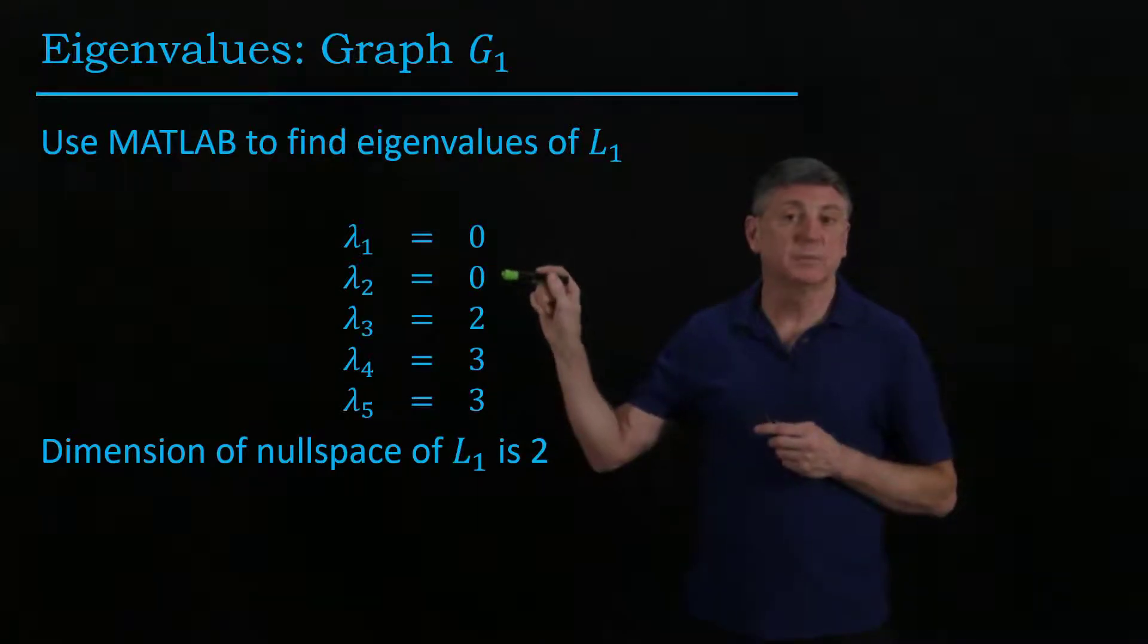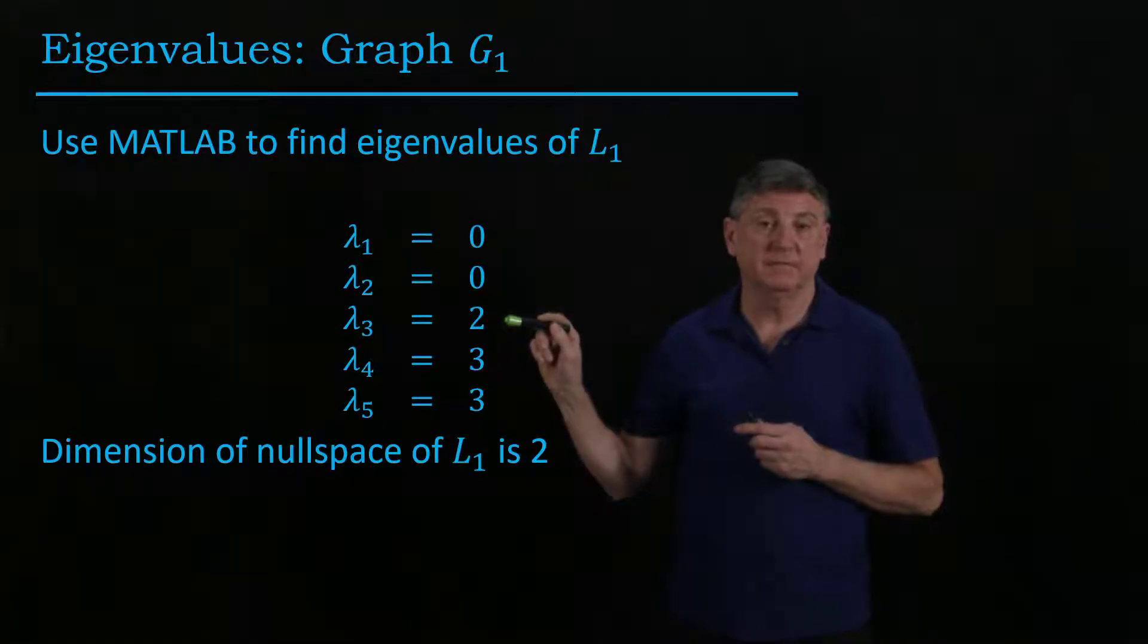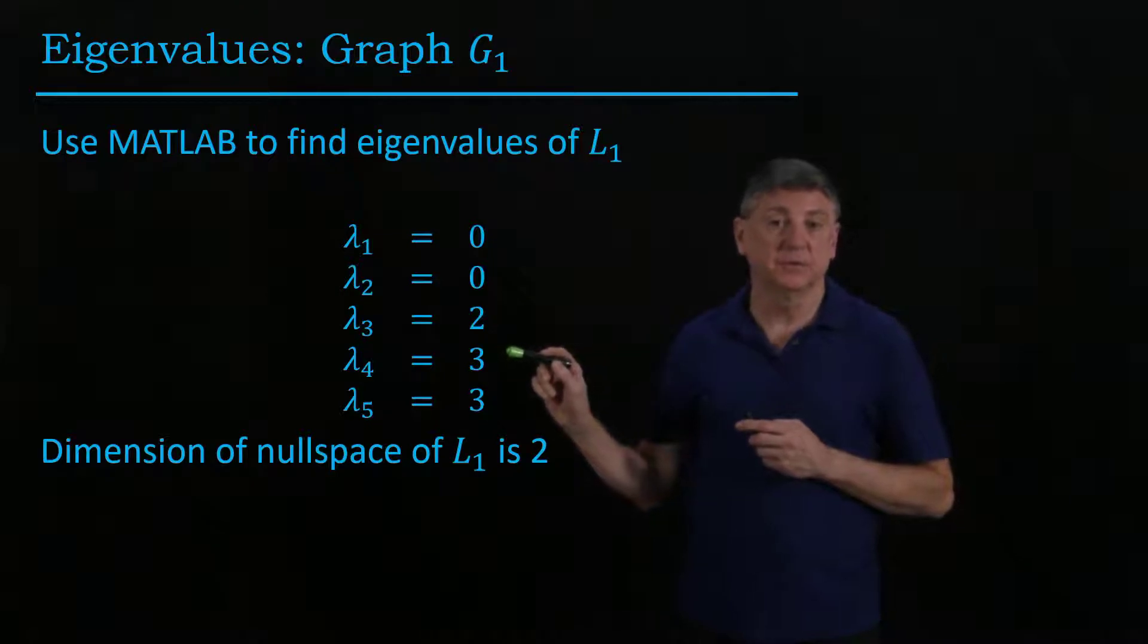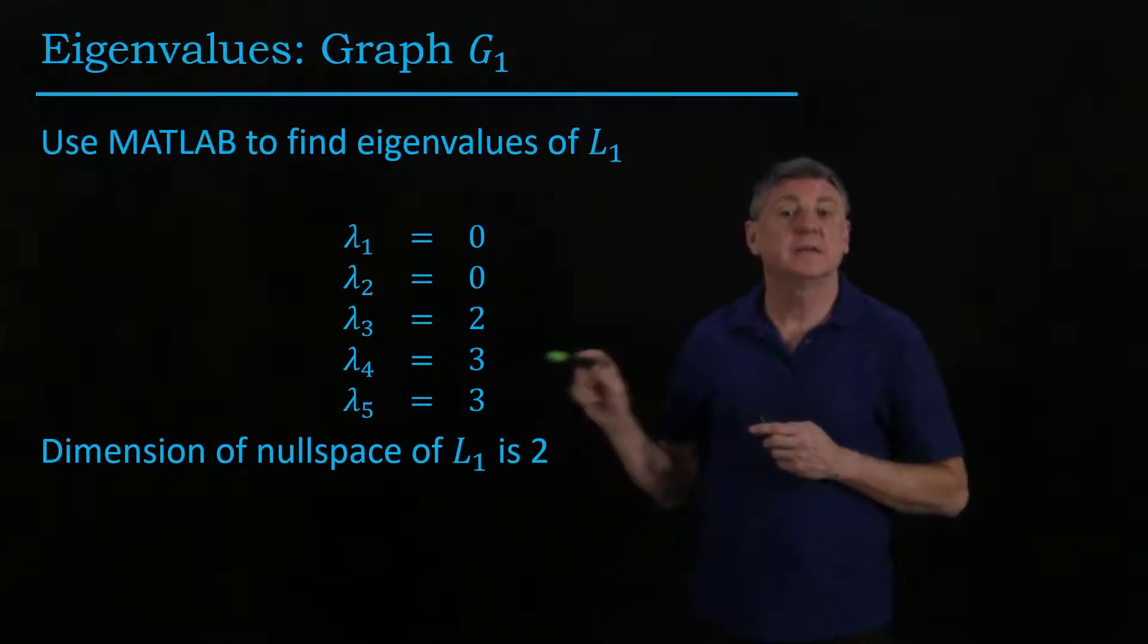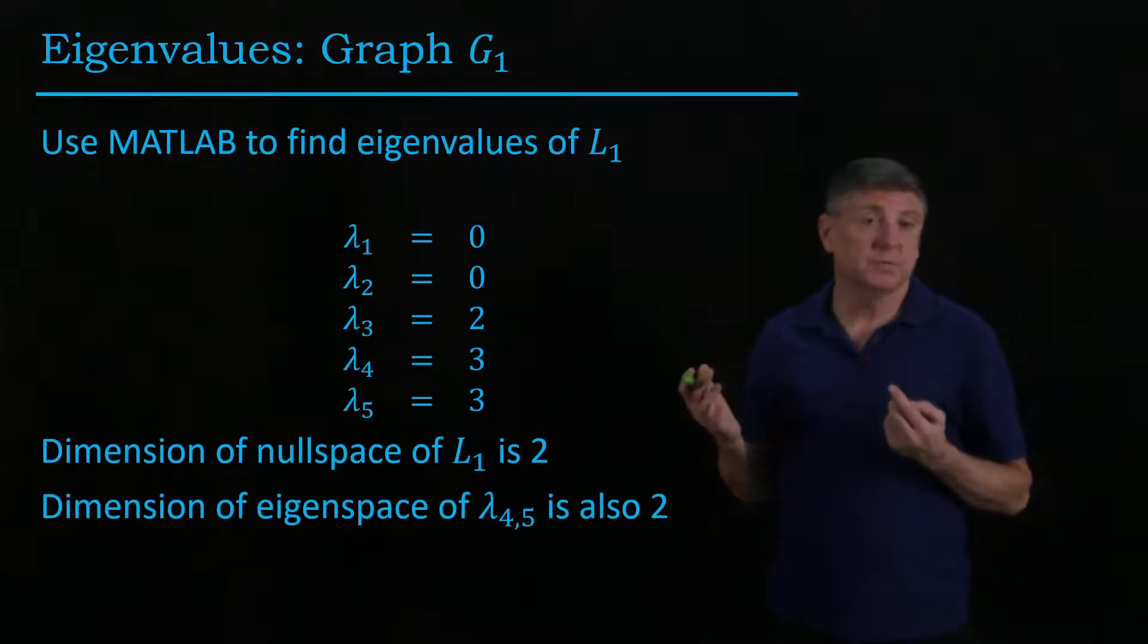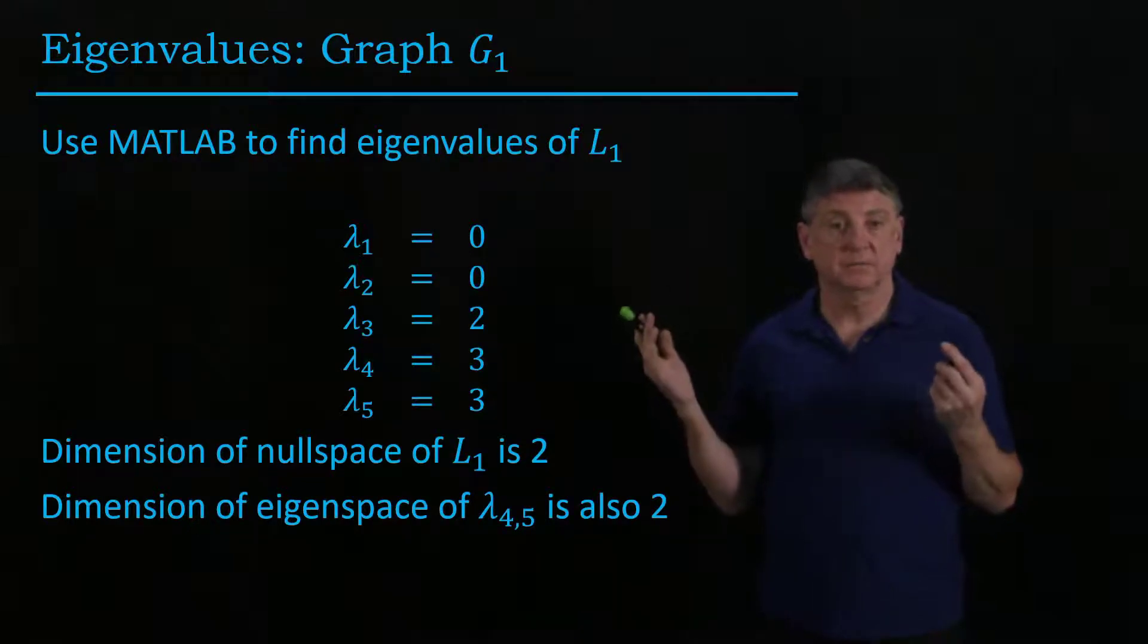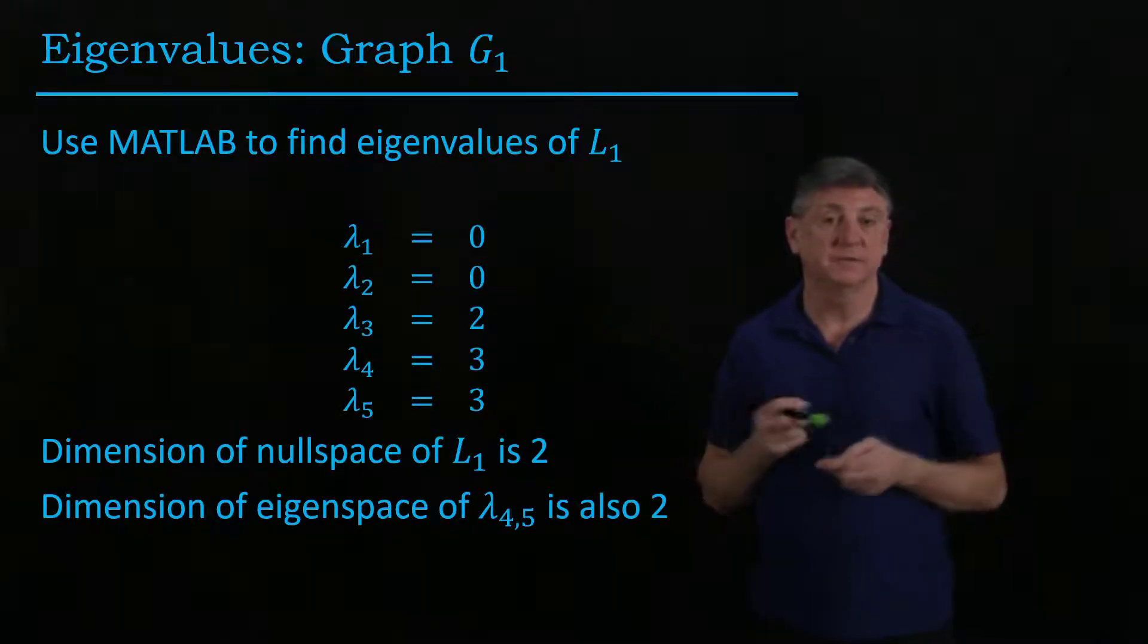That is, zero is a repeated eigenvalue and we can see that one eigenvalue has a subspace of dimension one and then the other unique, so there are only three unique eigenvalues here, and the other one has a dimension two eigenspace. So these are observations that we can make immediately by knowing the eigenvalues of this graph.